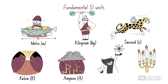The ampere for electric current, the mole for amount of substance, and the candela for luminous or light intensity. These are called fundamental SI units because they are the building blocks from which all other quantities in science can be expressed.